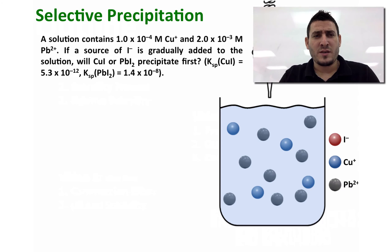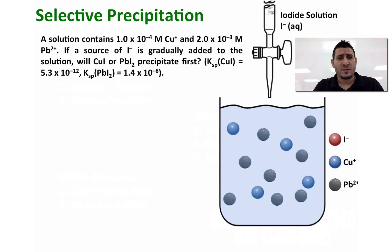Now let's take a look at this example for selective precipitation. The question says: a solution contains 1.0 times 10 to the power minus 4 molar of copper 1 and 2.0 times 10 to the power minus 3 molar of lead 2. If a source of iodide is gradually added to the solution, will copper iodide or lead iodide precipitate first? The KSPs of both solids are given.